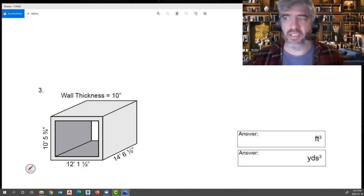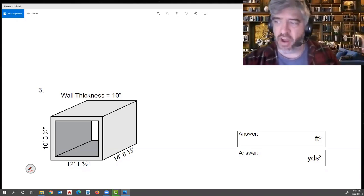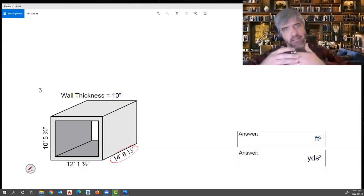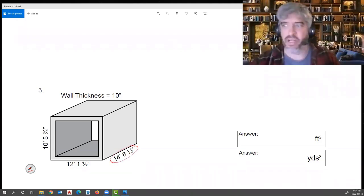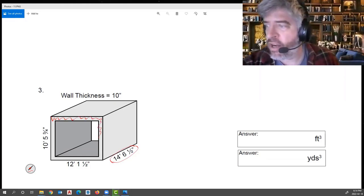First up, we're just going to basically solve this as logically as we see it. This shape does not change over its length. So obviously this 14 foot six and a half is that length, that third dimension, which means this here is our cross sectional area.